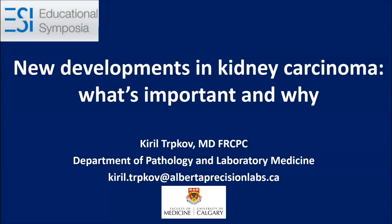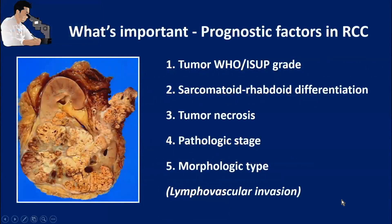Hello, everyone. In this lecture, we're going to talk about the new developments in kidney carcinoma — the important ones that you should be aware of. The lecture will revolve around these five key themes: the most important prognostic factors in renal cancer, the WHO ISUP grade, sarcomatoid and rhabdoid differentiation, tumor necrosis, issues pertaining to pathological stage, and some new morphologic types likely to be included in the new WHO classification.